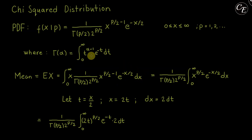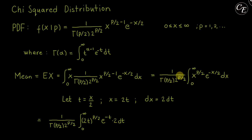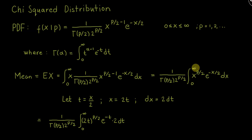Let us use the gamma function to simplify this integral. Let t = x/2, so x = 2t and dx = 2 dt. Substituting: for x we use 2t, for x/2 we use t, and for dx we use 2 dt. If x = 0 then t = 0, and if x = infinity then t = infinity, so the limits remain 0 to infinity.